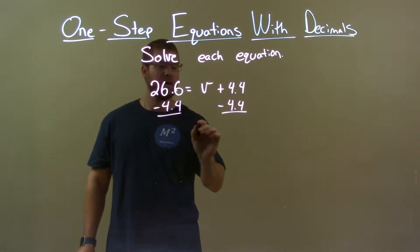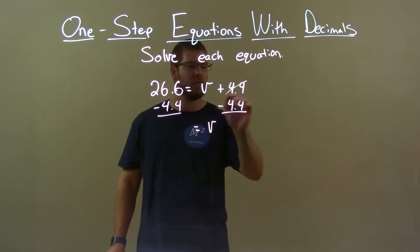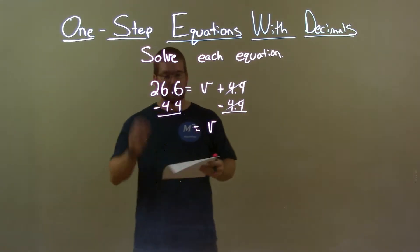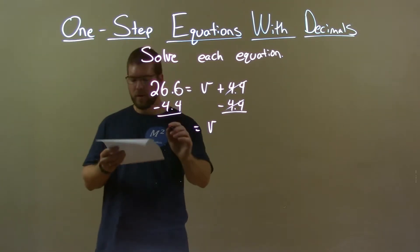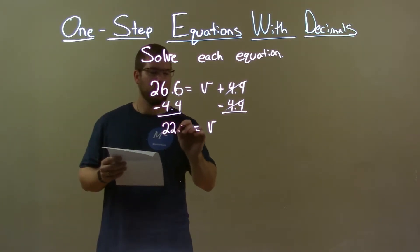What this does, on the right we're left with V by itself. 4.4 cancels. On the left, 26.6 minus 4.4 is 22.2.